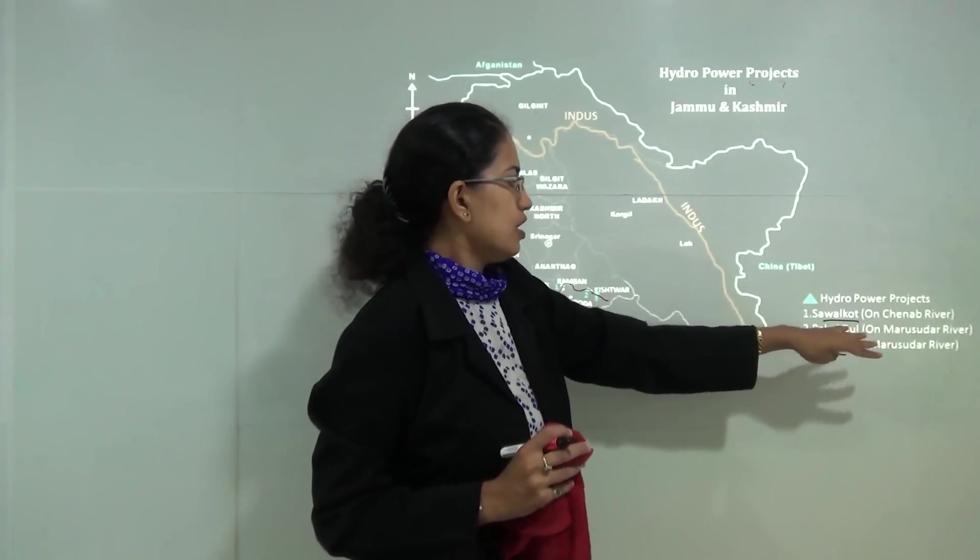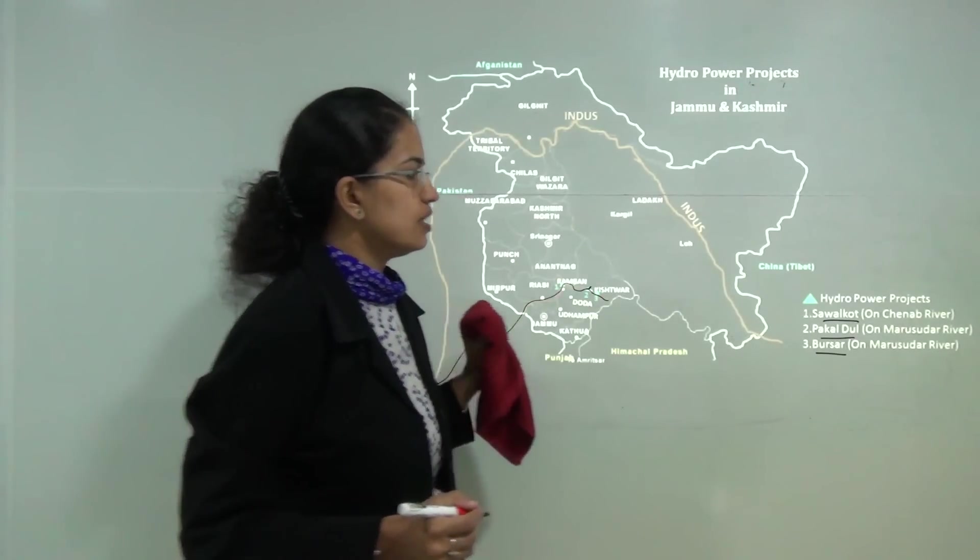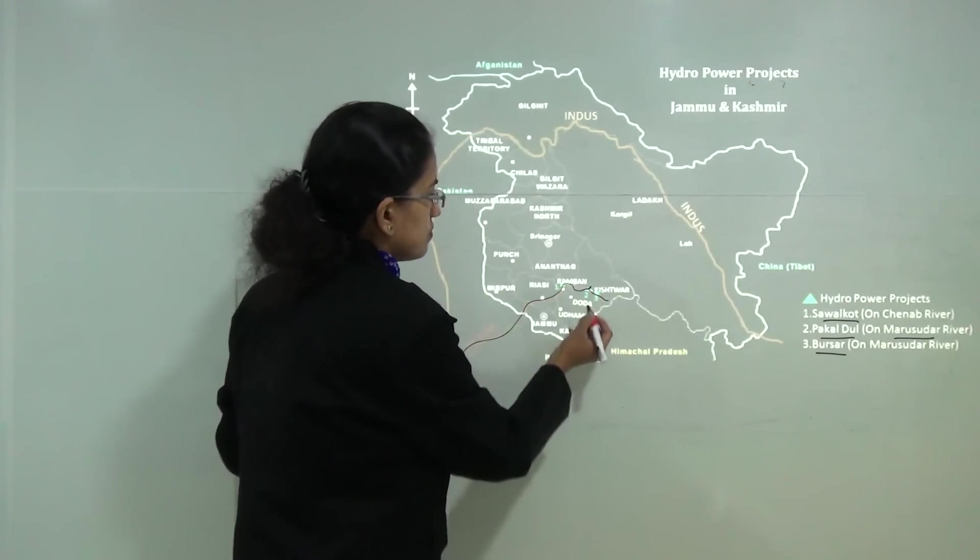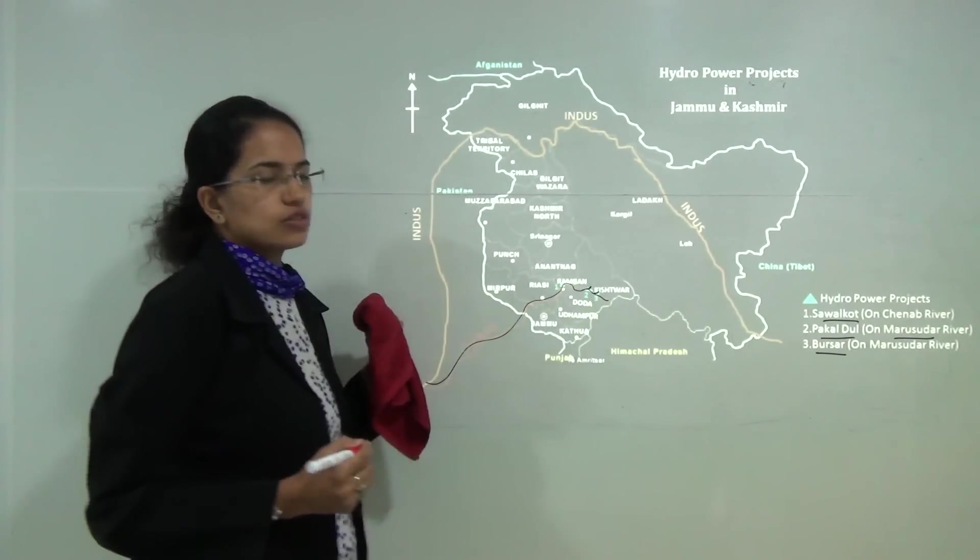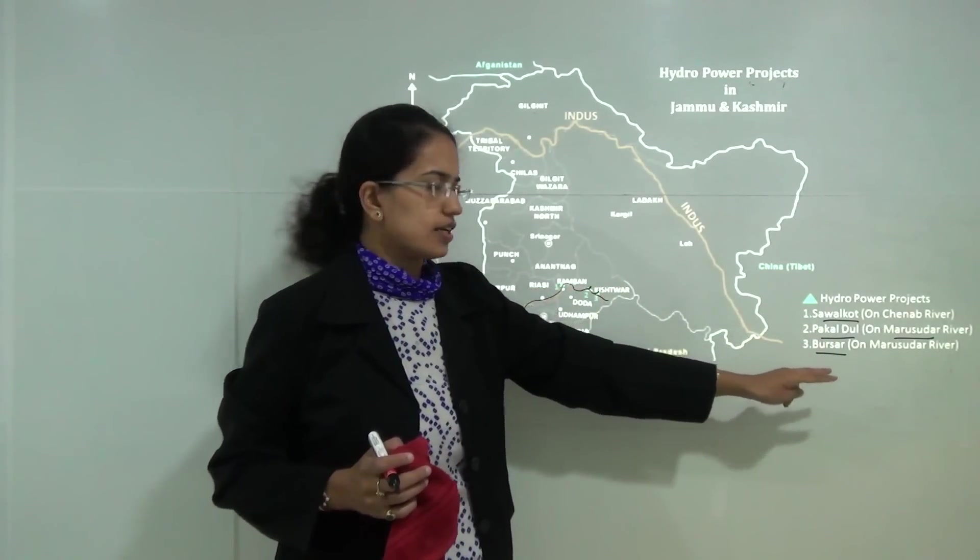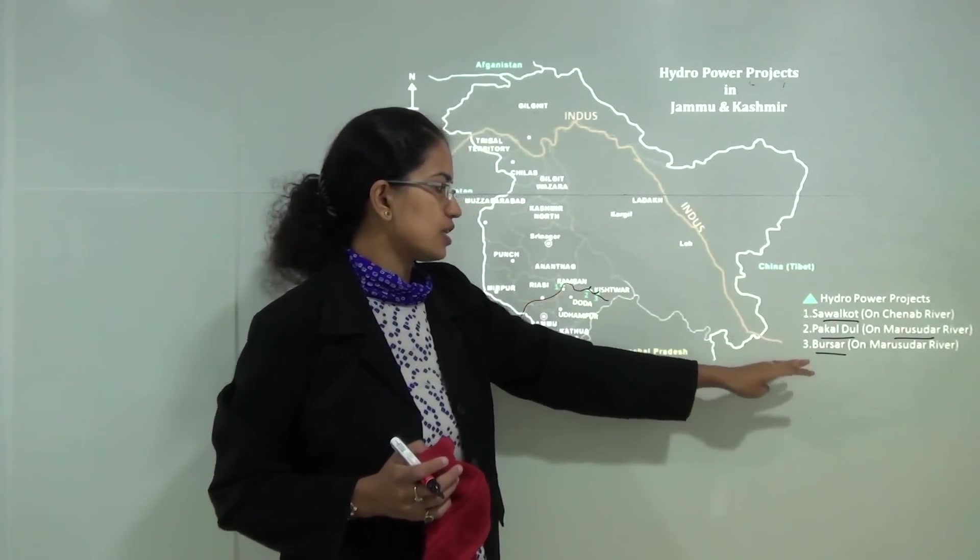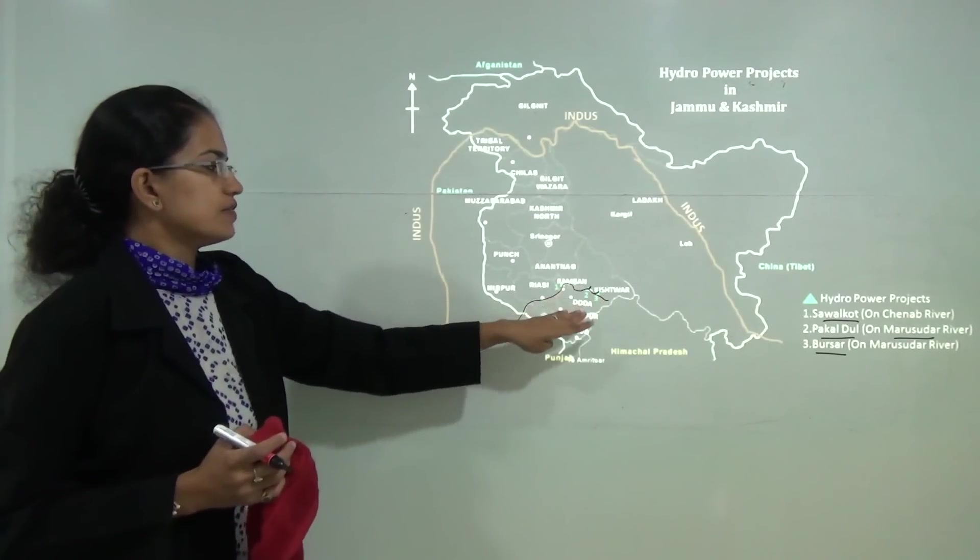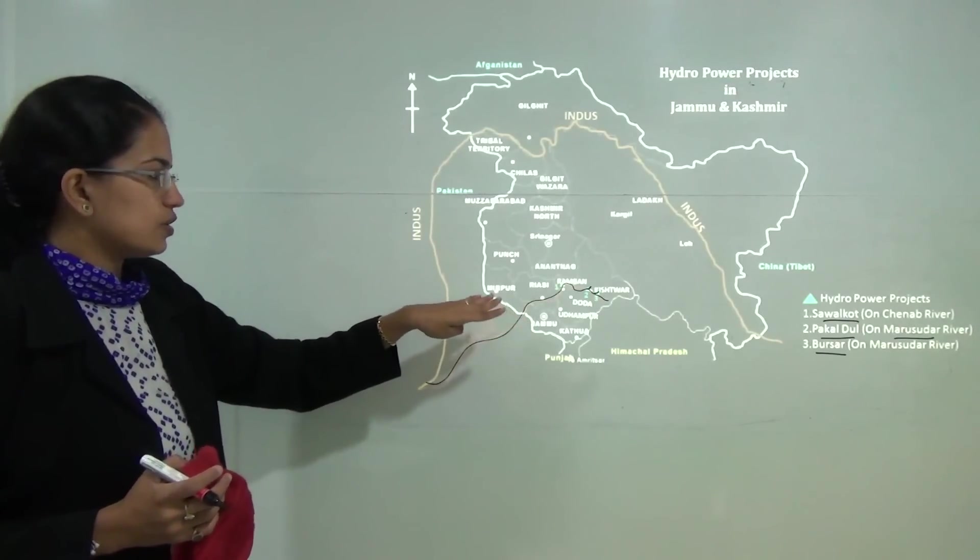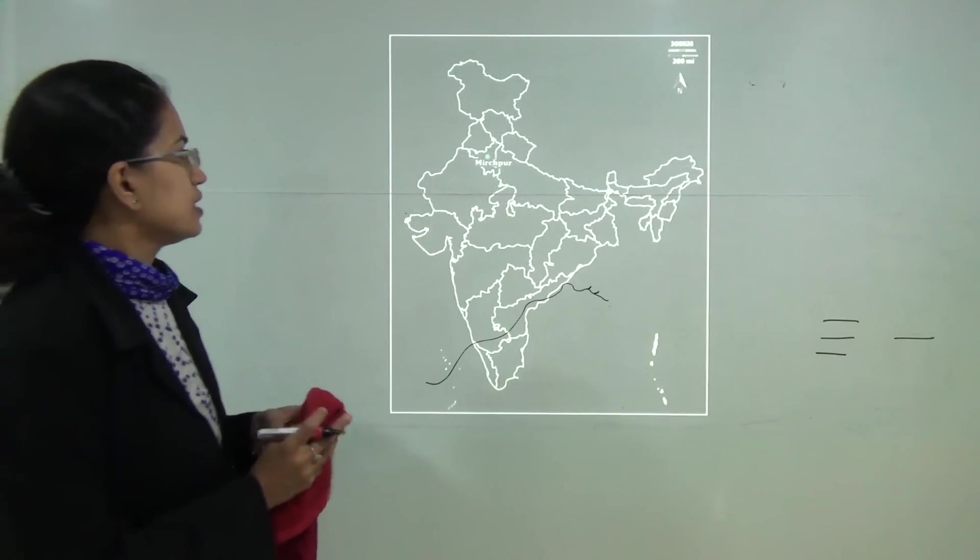Then you have Palakdul which is on the tributary of Chenab river which is the Maru Sudhar river and again the Bursar which lies at the border of Kishtawar and Doda and both of these are on the Maru Sudhar river. You have Palakdul hydroelectric plant and the Bursar hydroelectric plant which are both located on the Maru Sudhar river and finally you have the Sawalcoat hydroelectric power plant which is located on the Chenab river.